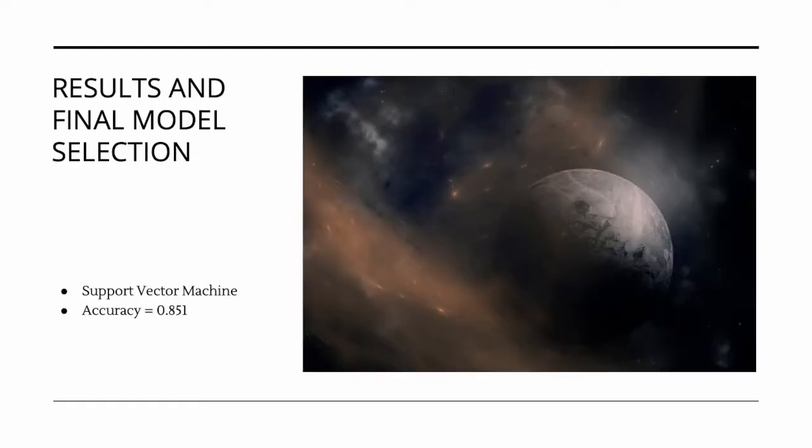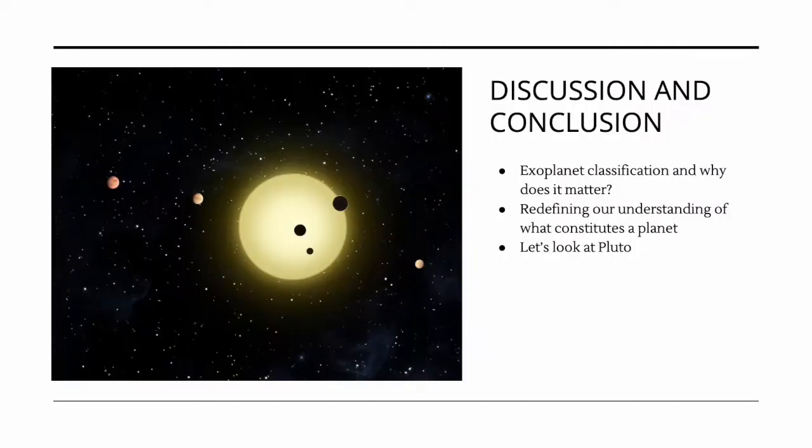Of all the models evaluated, the best performance was obtained from a linear model. More specifically, our final model was a support vector machine model with an accuracy of 0.851. Why should we care about obtaining a model that can determine exoplanet candidacy with around 85% accuracy?